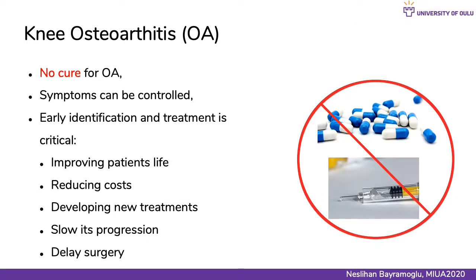Unfortunately, there is no cure for OA, but its symptoms can be controlled by modifying the risk factors and with other conservative measures, for example by weight management. Therefore, early identification and treatment of OA may be critical for decreasing chronic pain and improving joint function. It is also important to have a better understanding of the disease from a research point of view, to develop new treatments, slow its progression, and hopefully delay joint replacement surgery.